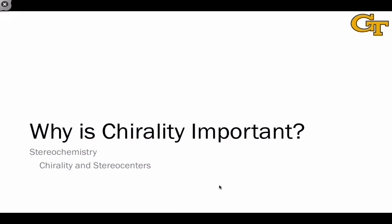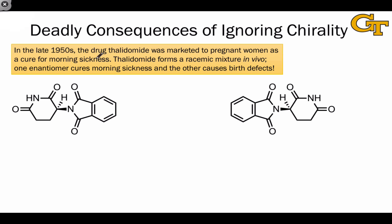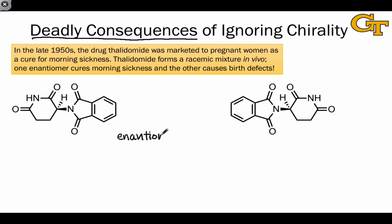Before all that, I want to address the question: why is chirality important? One historical answer is that ignoring chirality has potentially deadly consequences. In the late 1950s, the drug thalidomide was marketed to pregnant women as a cure for morning sickness. Thalidomide forms a mixture of two molecules when placed in the body, and these two molecules are isomers. More specifically, we call them enantiomers.